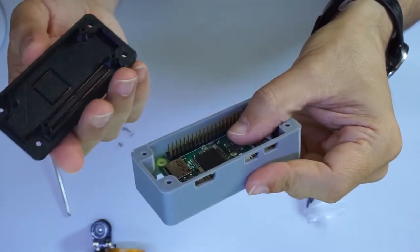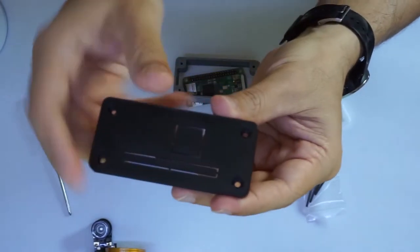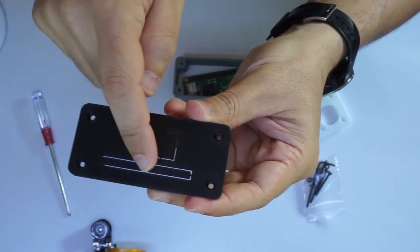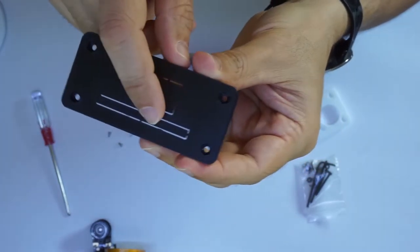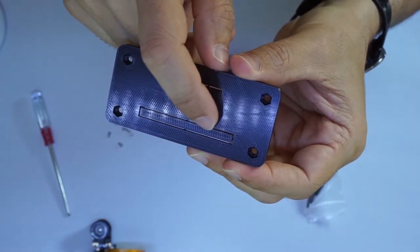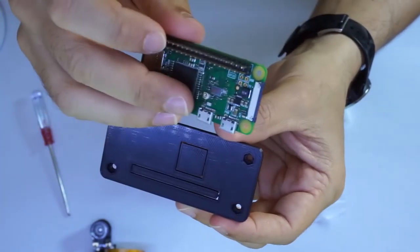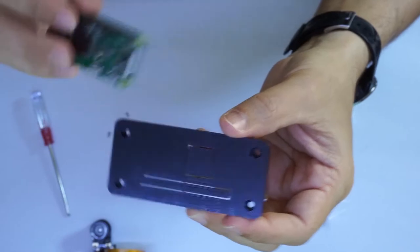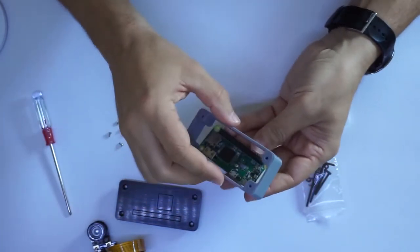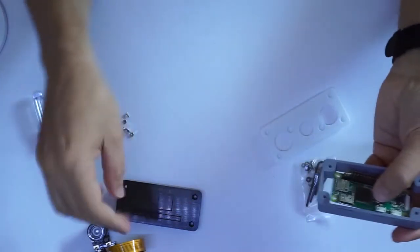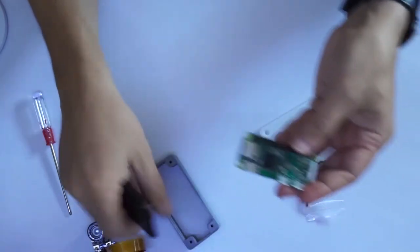As you can see in the case, there are openings for the HDMI port and the USB. This should go like this. Put the headers down. And also in the bottom cover, you have this opening for the GPIO pins. I guess we will have to break it because my Raspberry has the GPIO pins mounted. We need to break it.